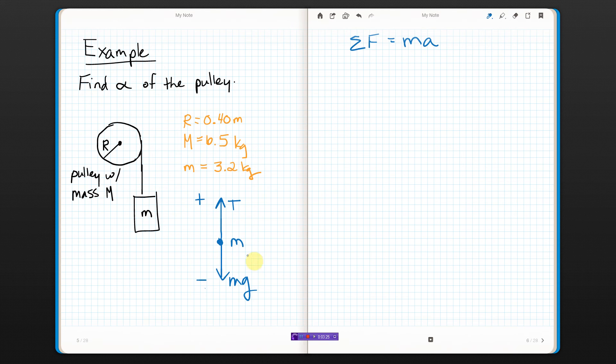So I write down Newton's second law. The M is this M, so I'm good. Net force, I've got tension up, weight down. So I just write T minus MG equals MA. And I'm kind of stuck. I'm done with that.